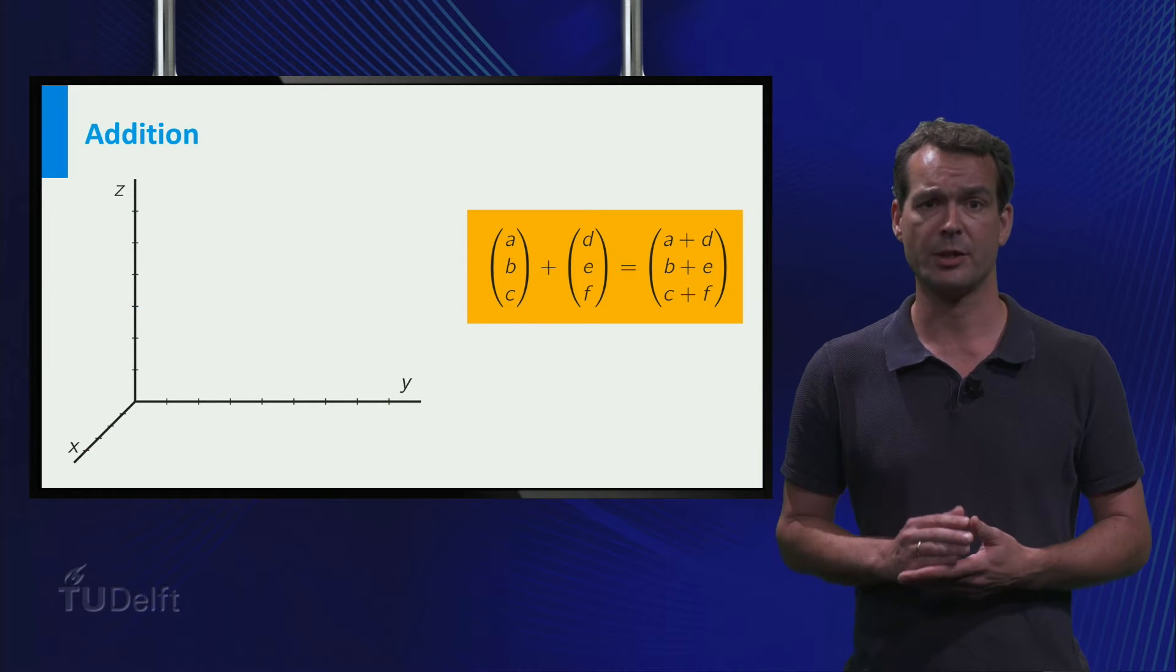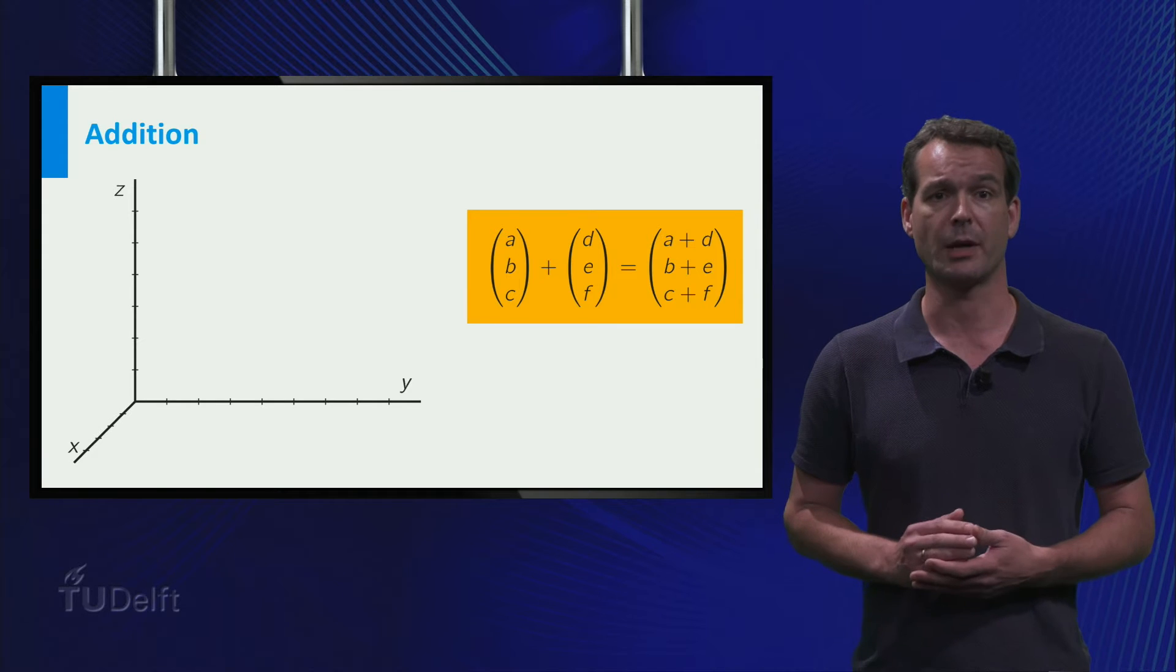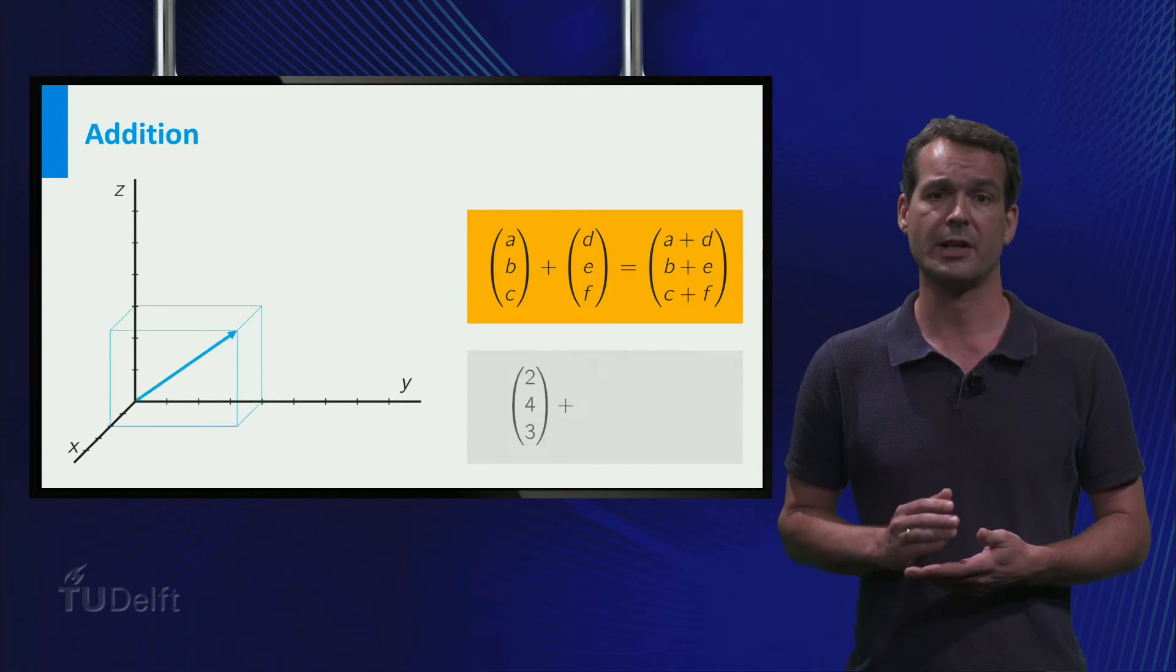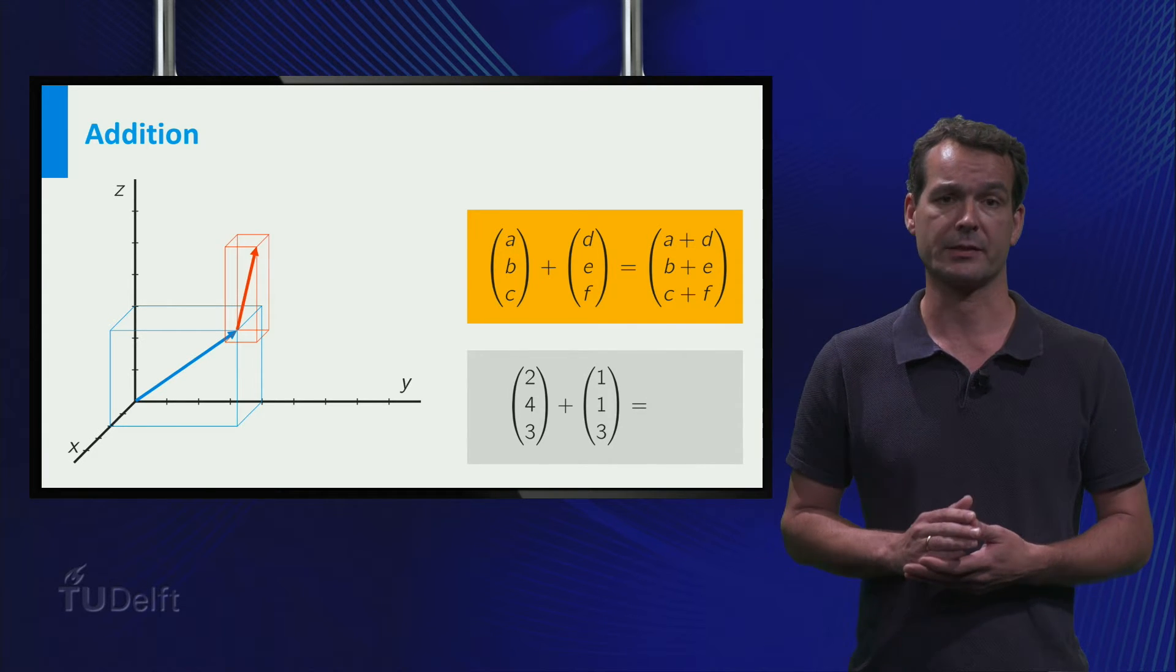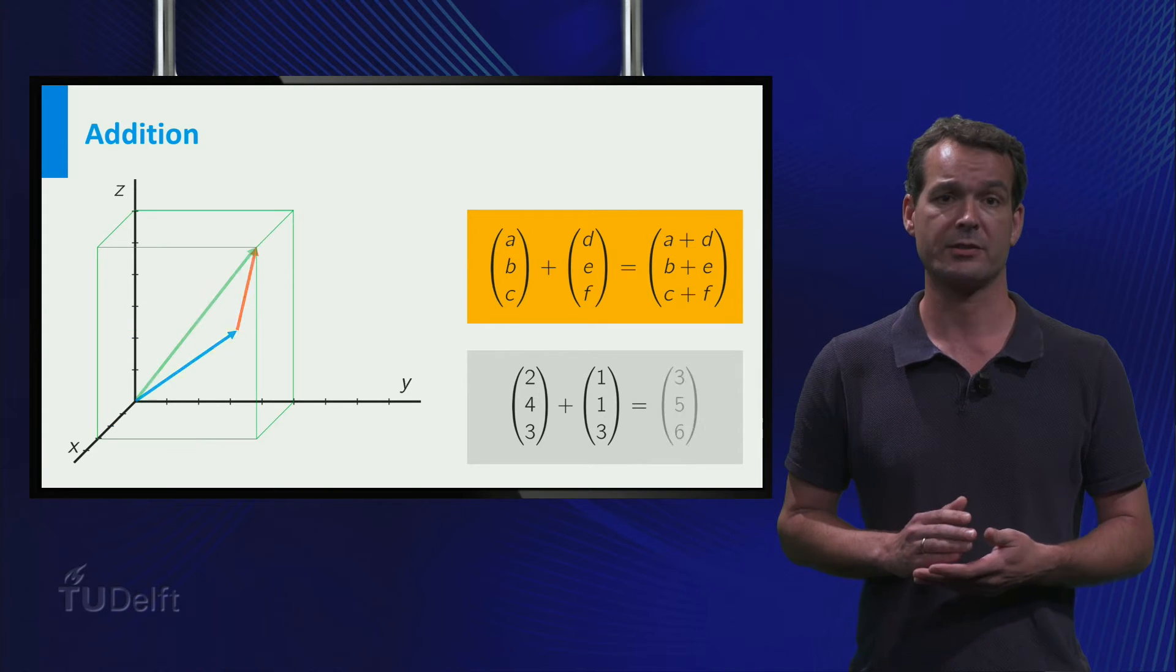Addition of two vectors is still putting them head to toe. And the calculation is the same as for two-dimensional vectors. You can add them component-wise. For example, take the vector again and add the vector. Then the resulting vector is.